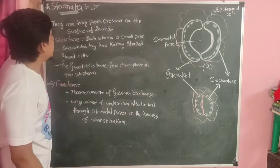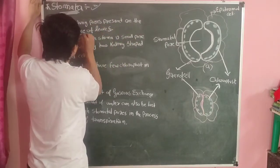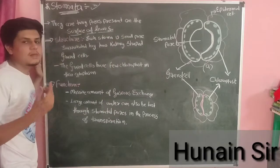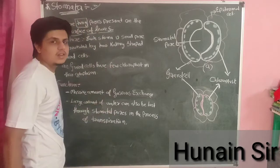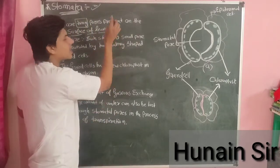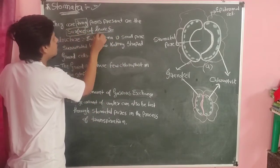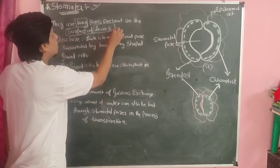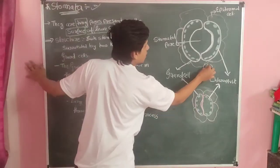Stomata are tiny pores present on the surface of leaves.